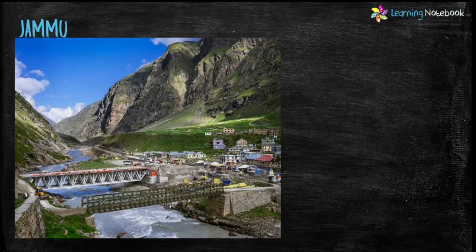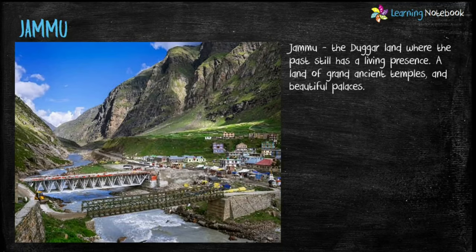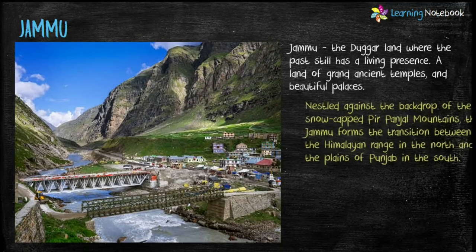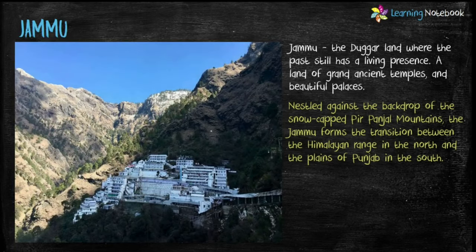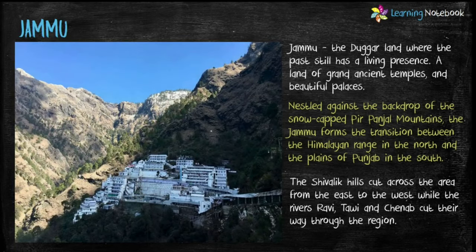The last famous tourist place is Jammu, which is a land of grand ancient temples and beautiful palaces. Nestled against the backdrop of snow-capped Pir Panjal mountains, Jammu forms the transition between the Himalayan ridge in the north and the plains of Punjab in the south.